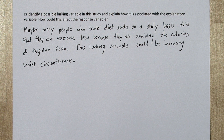The reason lurking variables like this are a problem is because their effect on the response variable is difficult to distinguish from the effect of the explanatory variable. In this case, we don't know if less exercise is causing the waist circumference increase, or if it's the diet soda.